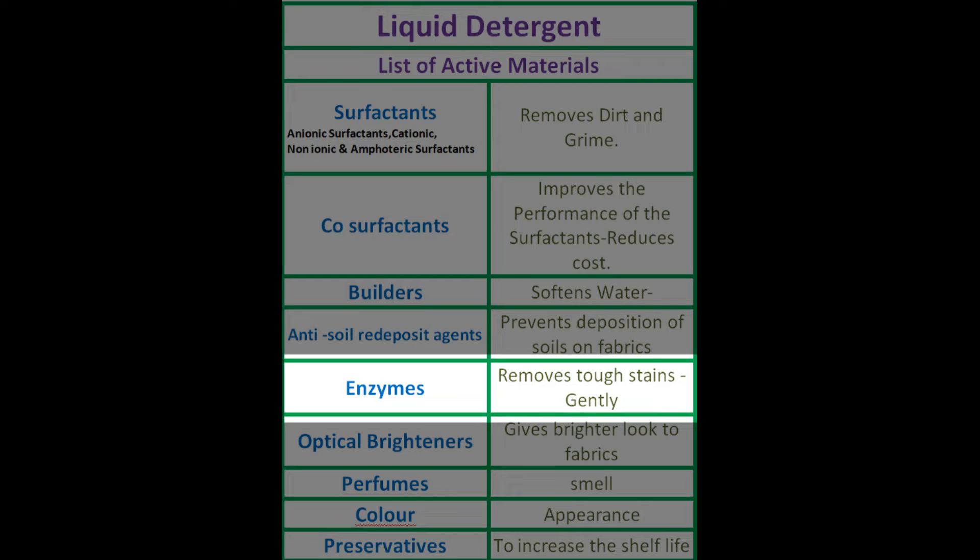Surfactants will remove the dirt and grime, but surfactants will not remove stains. So to remove stains — even the tough stains — we need enzymes. Enzymes are very gentle materials. Without causing harm to fabrics, they will remove the toughest stains in a gentle manner. It is the worldwide accepted method for removal of tough stains on fabrics. The problem is it is costly and not available everywhere.